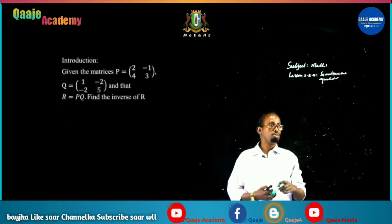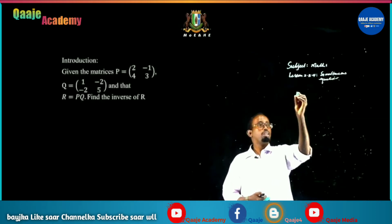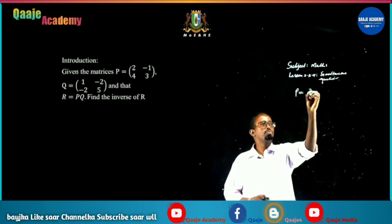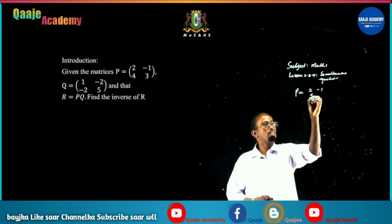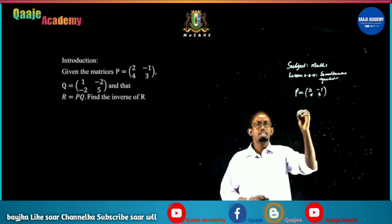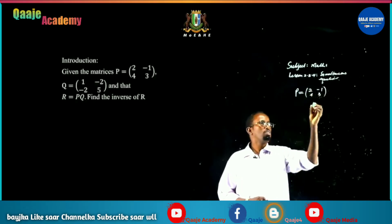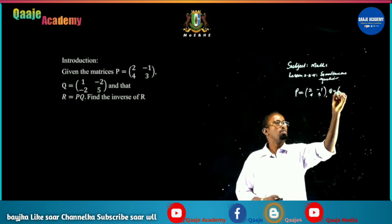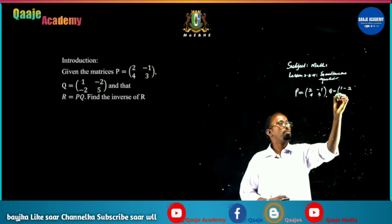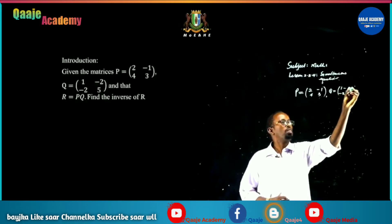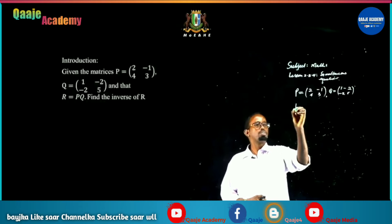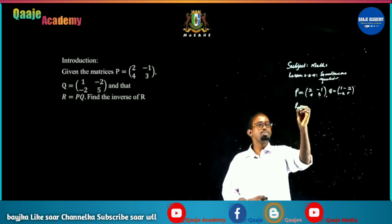Introduction to the previous lesson. We are given P equal to the matrix [2, -1; 4, 3], and Q equal to the matrix [1, -2; -1, -2; -2, 5]. The question is to find the inverse of R.